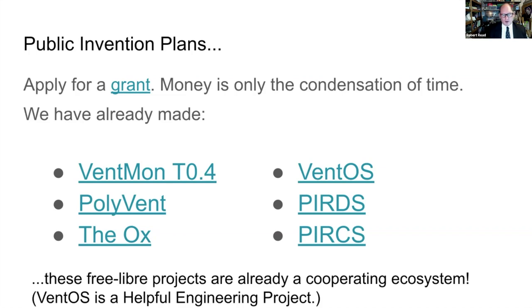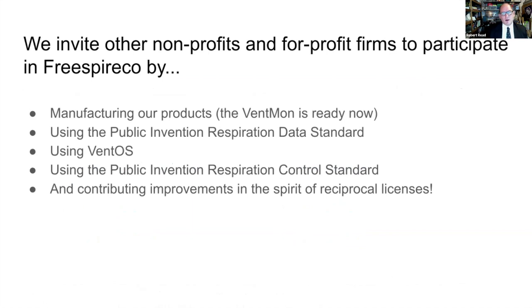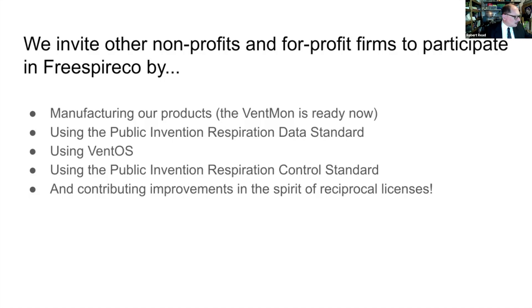The Polyvent is our air drive. The Ox is a functional oxygen concentrator. VentOS is a controller. We've defined PURDS, which is the Public Invention Respiration Data Standard. I would like to invite other nonprofits and for-profit firms to participate in Free Spirico by manufacturing our products. There's nothing stopping anyone from taking this product, making it, and selling it at a profit right now. You have to obey our licenses, of course, but those licenses don't make money flow to us — they simply mean you cannot monopolize it and keep someone else from making a ventilator.